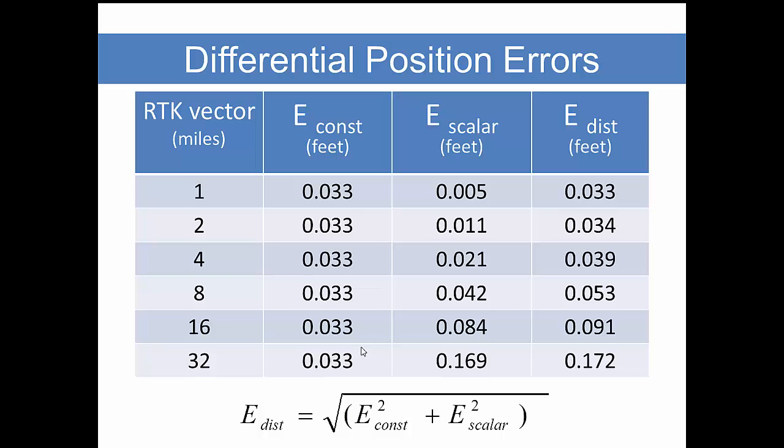So then let's look at the net effect of this by applying our constant error and our scalar error. They don't merely add up. We use a simple statistical model that we call the error of a sum. And when we square each error, take the sum of those squares, and take the square root of that, we get this distance error, and we have listed it over here.